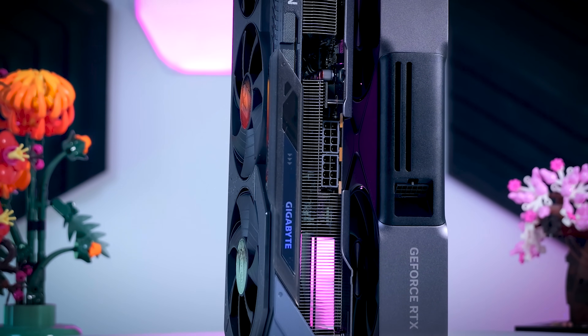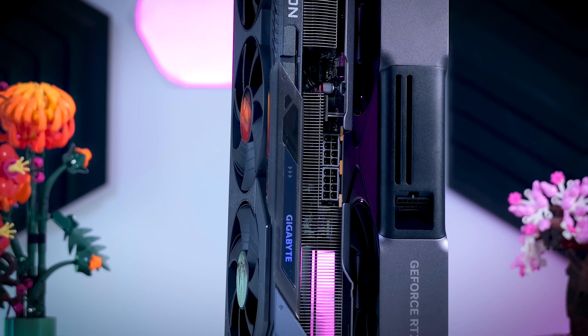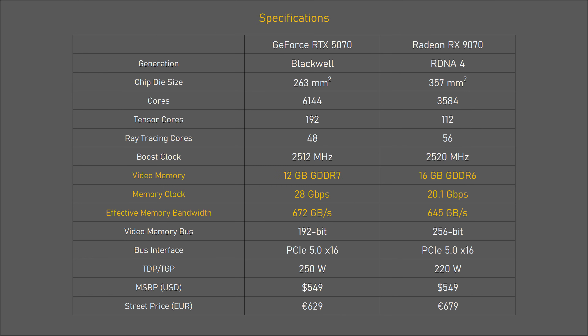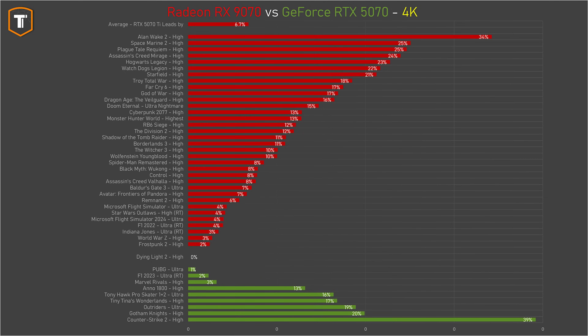The RX 9070 is generally ahead of the RTX 5070 — sometimes by an insignificant margin, sometimes by quite a lot. Counter-Strike 2 was one example where the situation reverses: the RTX 5070 shows significantly better results, especially at 4K, with a pretty big difference even at 1440p, though results are much closer at 1080p. This is probably due to the faster GDDR7 memory in the RTX 5070.